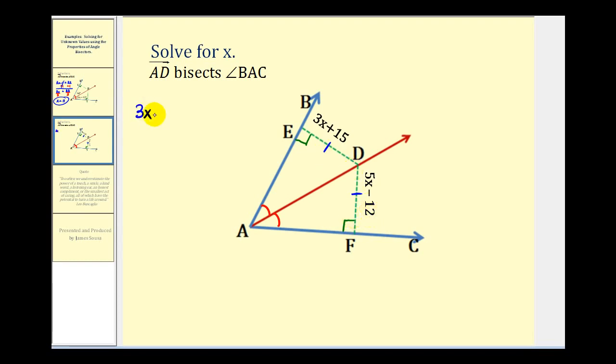So we have three x plus 15 equals five x minus 12. If we're going to solve for x, we need to have x on one side of the equation. Let's go ahead and subtract five x on both sides of the equation. So we'd have negative two x plus 15 equals negative 12. Now let's go ahead and subtract 15 on both sides of the equation.